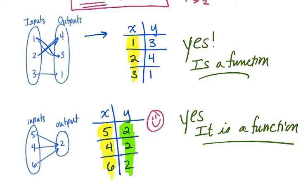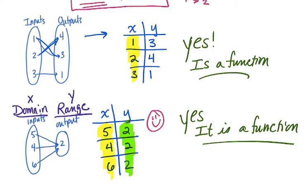When talking about inputs and outputs, we can also use the words domain and range. Domain represents your inputs or x-values, and range represents your outputs or y-values. A helpful memory trick: D comes before R in the alphabet, just like x comes before y — so domain matches with x and range matches with y.